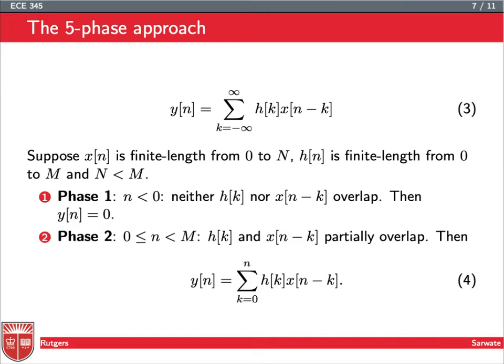If we look between 0 and time m, and we're assuming that x is finite length from 0 to n, and h is finite length from 0 to m, and in particular that x is shorter than h, we can see that between 0 and m-1, we have this partial overlap where x is sliding into the system. We see there's this portion of overlap between x and h. We're going to get a sum that goes from k equals 0, up to n, because n is the leading point of x. So that's phase 2, x is partially overlapping with h.